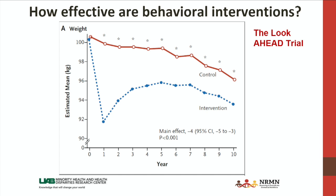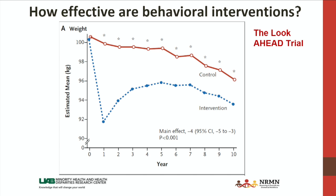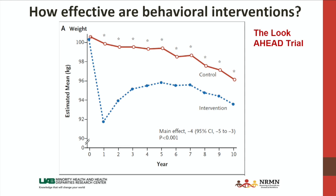Another efficacy study was the Look Ahead trial, which was also a weight loss study. All participants had type 2 diabetes, and the goal was to help them reduce their risk for cardiovascular disease complications through weight loss. There were two arms — the lifestyle weight loss intervention and an educational control condition. Those in the intervention — the blue line — lost a really meaningful amount of weight during the intensive first year of treatment. They did gain some weight over time, then started to lose again, while the control group lost a little naturally. But even with that regain, across 10 years of follow-up, the intervention still had a reduced body weight compared to the control. This shows that meaningful weight loss can be achieved and sustained over a very extended period of time.